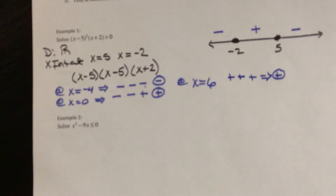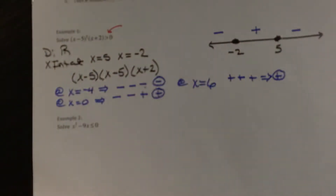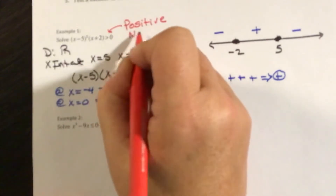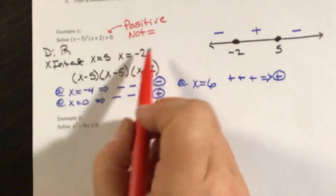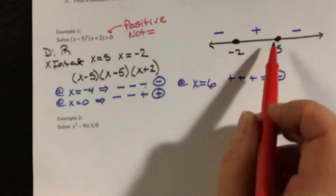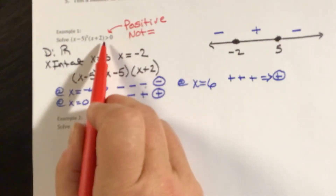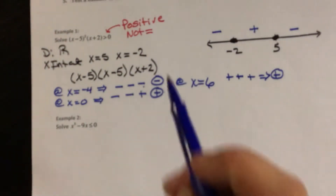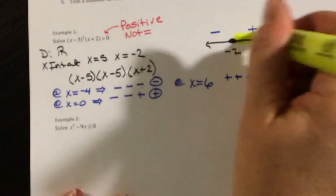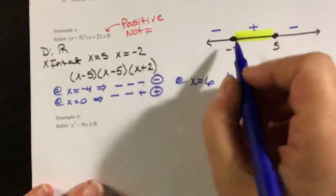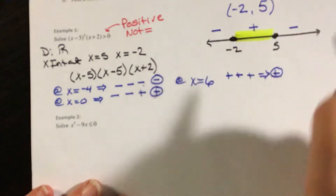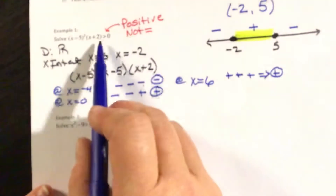We are looking for y values that are greater than 0, which are positive values, and it does not equal 0. So when writing in interval notation, I cannot include the points on my number line because there's no equal sign. The positive values are in the middle region, so my solution in interval notation is negative 2 to 5, not including the endpoints.